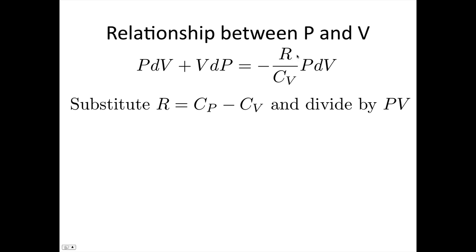Now what we want to do is we actually want to get rid of this R. So we showed last lecture that C_p minus C_V was equal to R. So we're going to replace the R and divide by PV. When we do that, we end up with dV over V plus dP over P is equal to minus (C_p minus C_V) over C_V times dV over V.